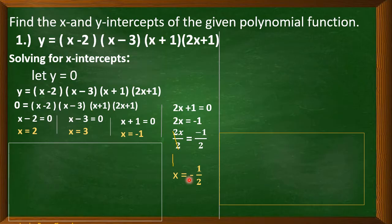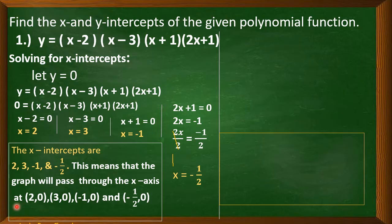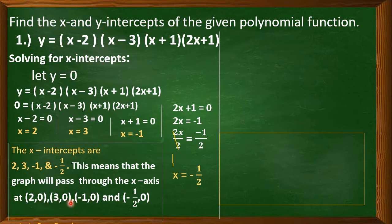So these are the x-intercepts of the given polynomial function: 2, 3, −1, and −1/2. This means that the graph will pass through the x-axis at the points (2, 0), (3, 0), (−1, 0), and (−1/2, 0). Our y-coordinate is always 0 since we let y equal 0.